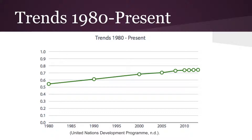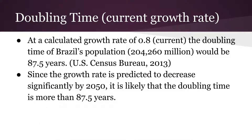This is a graph of the population growth rate starting in 1980, showing the slow increase. The doubling time at the current growth rate would be 87.5 years, given the current growth rate of 0.8 and the population of 204,260,000 million people, which is Brazil's current population. Since that growth rate is predicted to decrease significantly by 2050, the doubling time is likely more than 87.5 years.